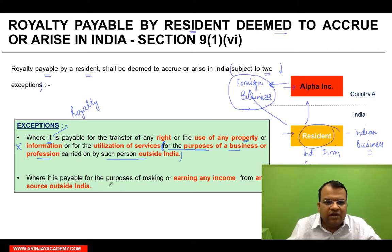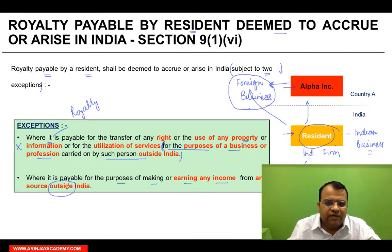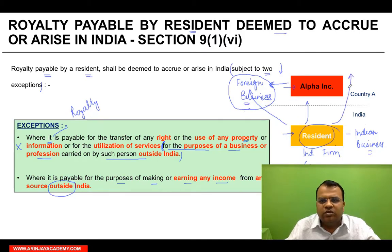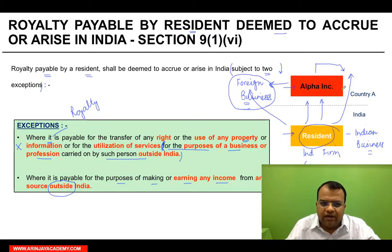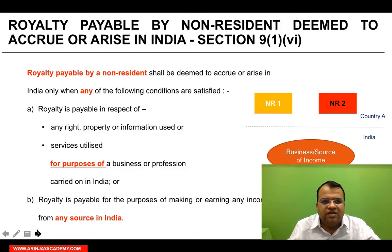Exception two: where the royalty is payable for the purposes of making or earning any income from any source outside India. This also relates to activities outside India — it may not be a business, but some other activity outside India. For that, if I took some services or property from Alpha Inc. and paid royalty, even in that case it will not be treated as royalty deemed to accrue or arise in India. Because it was paid to earn income from a source outside India. Within India it would be covered; outside India it is excluded.